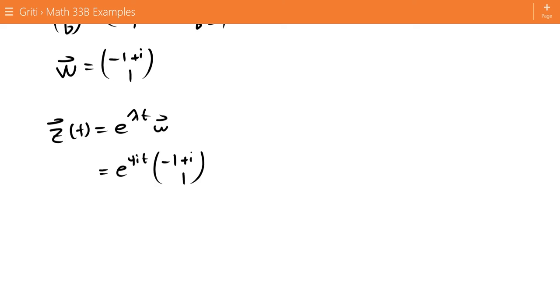We want to decompose this into its real and imaginary parts. First, we're going to take this exponential and use Euler's formula to convert it to cosine 4t plus i sine 4t, and then we're going to split up this vector here into negative 1, 1, plus i, 0, 1.